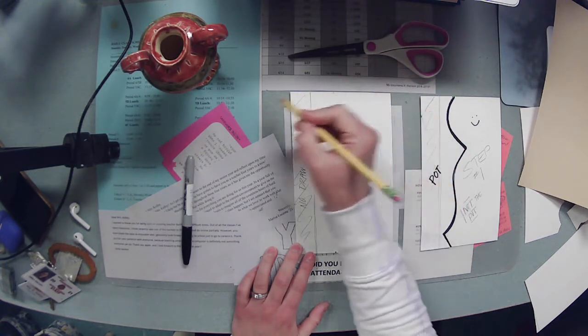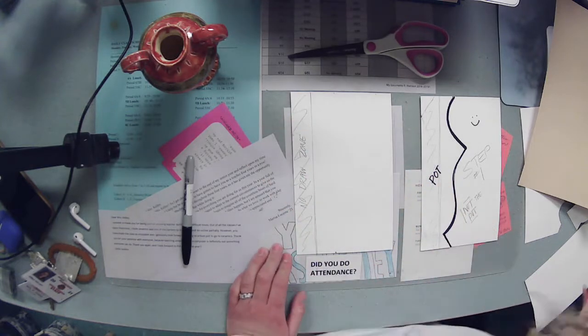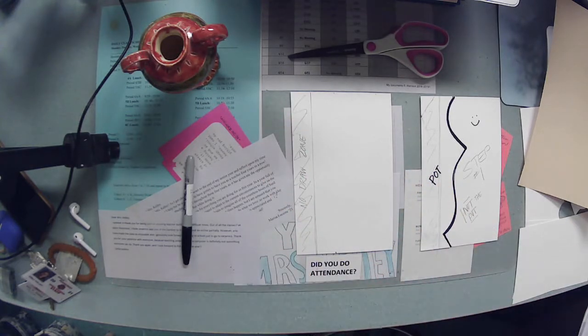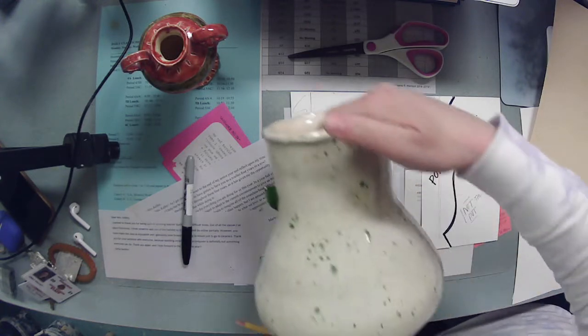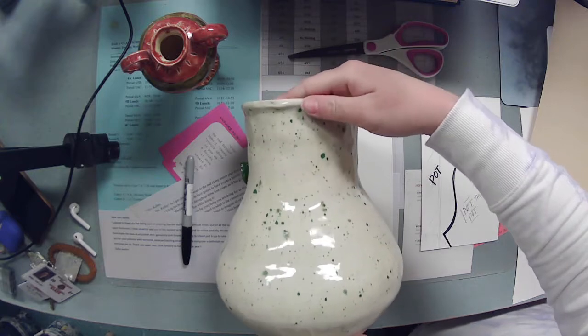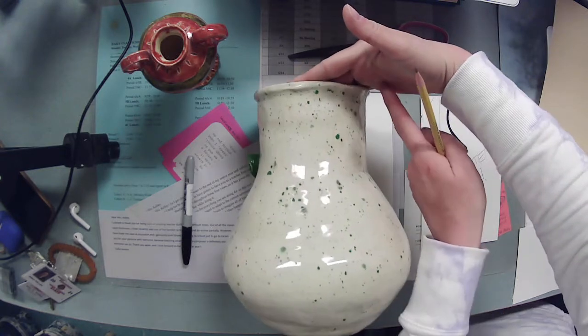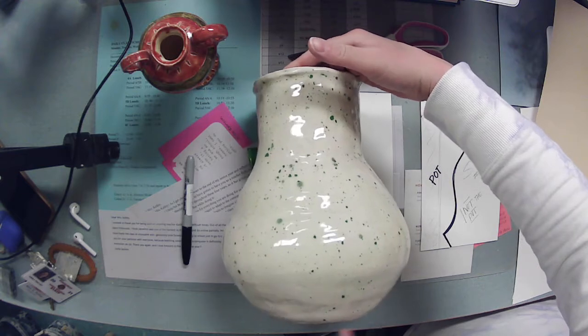This is going to be the width of the opening of my pot and I just do this so that if you want a really wide opening on your pot, I'm marking where how wide the opening is gonna be.